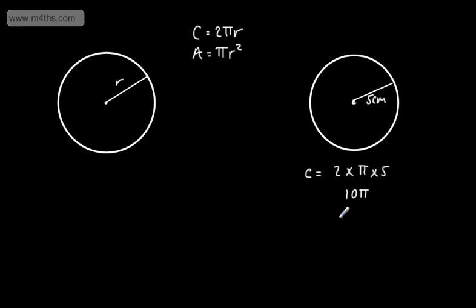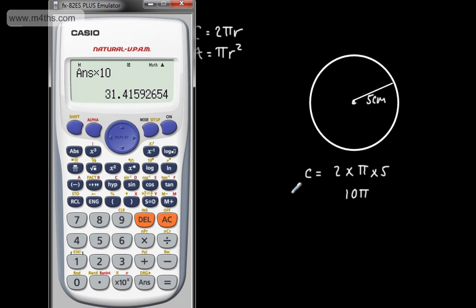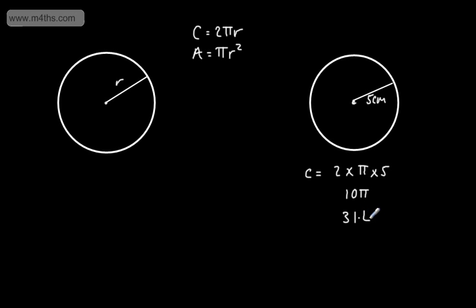We can also put this through a calculator. Pi is approximately 3.14159 and so on. Multiplying by 10 gives us 10π, which is 31.4 to one decimal place. So the circumference is 31.4 centimetres. Remember, this is a length, so our units are centimetres — I've rounded to one decimal place. That's the length around the outside of the circle.